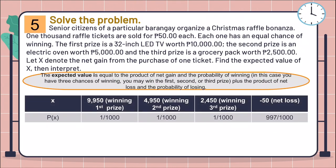So, this is how our table of distribution would look like. For winning the first prize, we will only have 9,950 because we subtracted the cost of each ticket from 10,000. And our chance of winning it is only 1 over 1,000. Same goes to winning the second prize. We will only get 4,950 and 2,450 for the third prize, with 1 over 1,000 chance of winning too. While negative 50 is our net loss, and the probability of losing is 997 over 1,000.